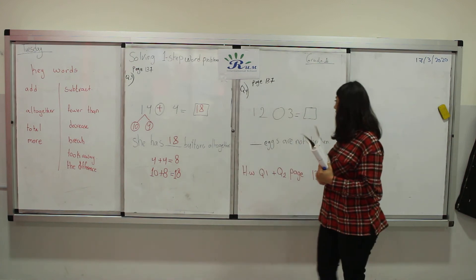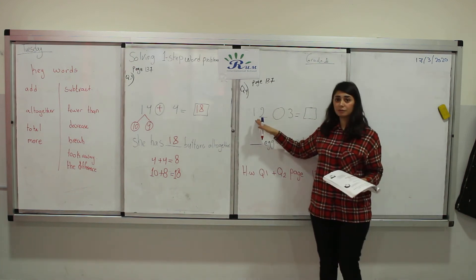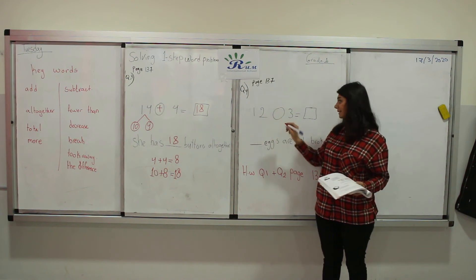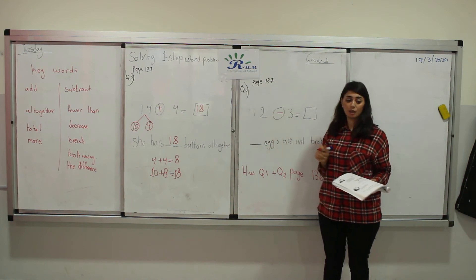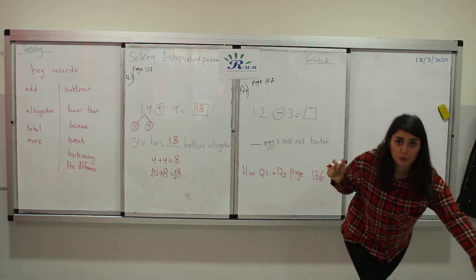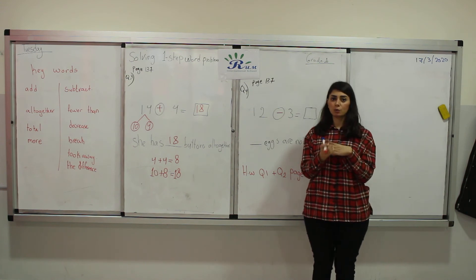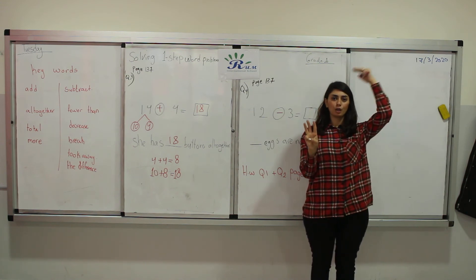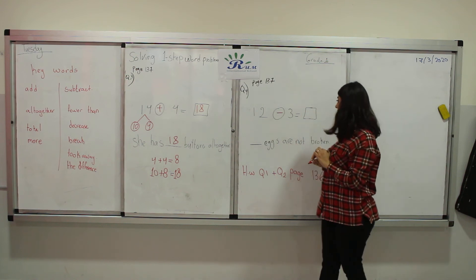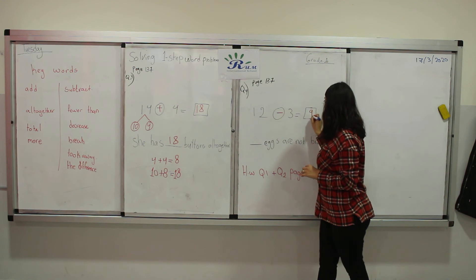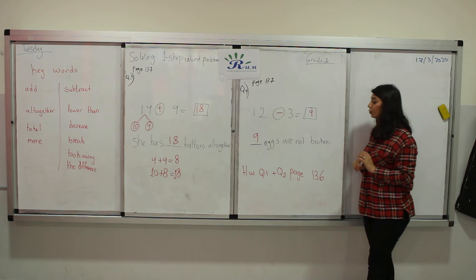Here we have to subtract. 12, exactly, minus. Good job. 12 minus 3. Here minus, so we have to count on or back. Yes, it's counting back. 12 minus 3. 12, 11, 10, 9. The answer is 9. 9 eggs are not broken.